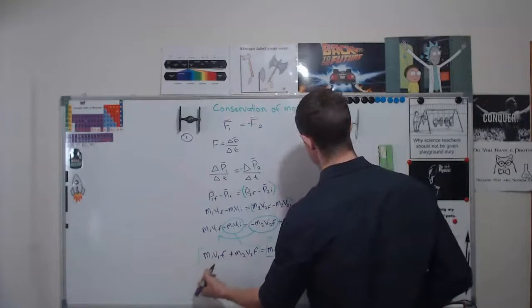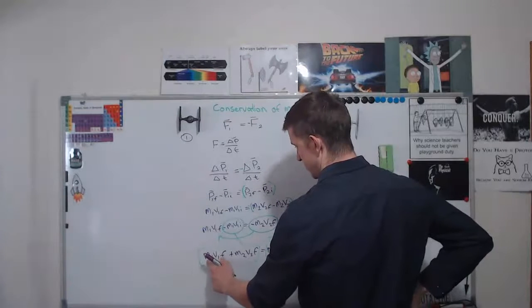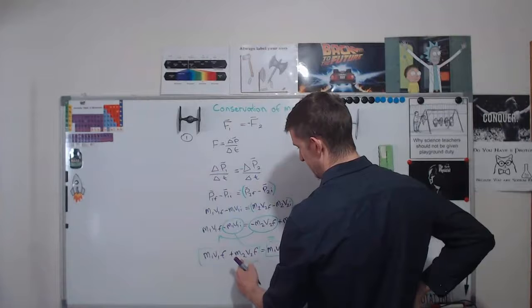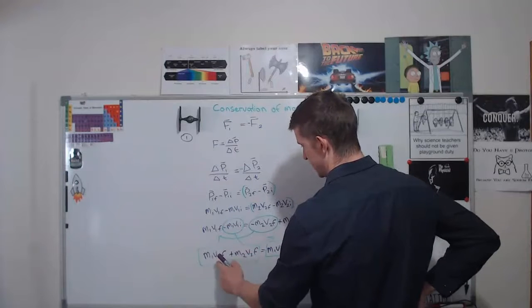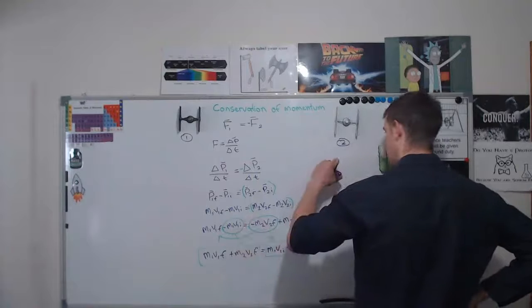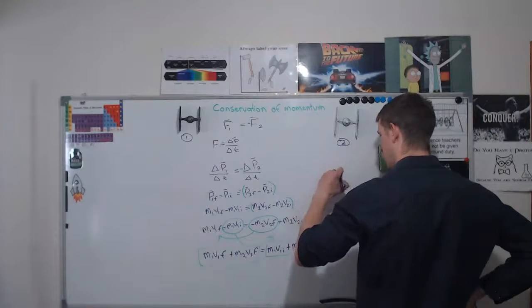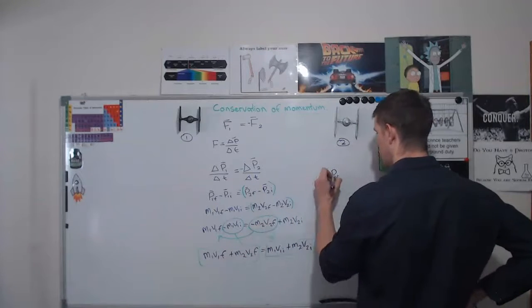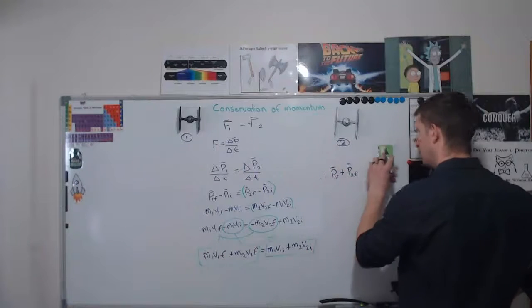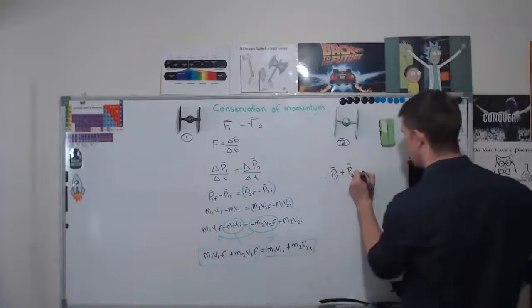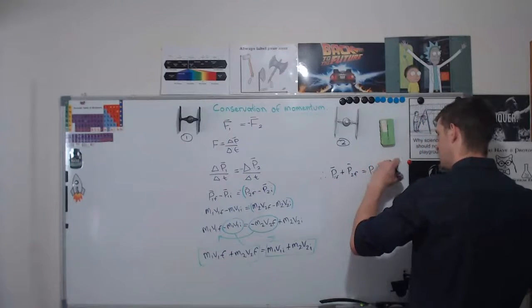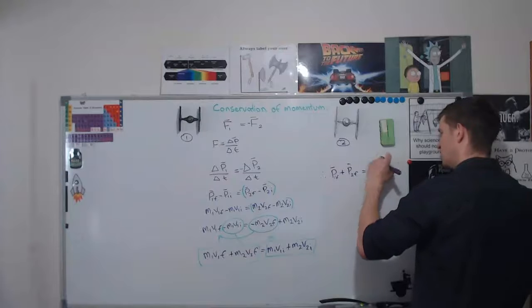So remember if you look at this, I can break it back into this is M1 V1 final. So this is final momentum, and this is final momentum, but it's for different objects. So that means that it's equivalent to the momentum final of 1 plus momentum final of 2, and that's equal to the momentum initial of 1 plus the momentum initial of 2.